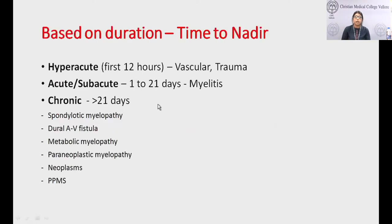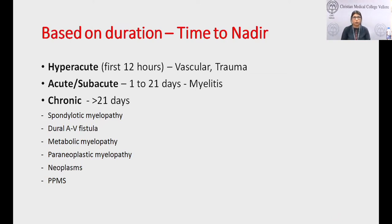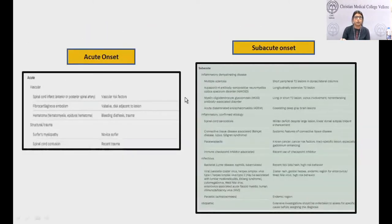For determining the etiology of spinal cord disorders, duration is key. Hyperacute — within the first 12 hours — classically means vascular involvement or trauma. Acute to subacute — 1 to 21 days — is classically myelitis: idiopathic transverse myelitis, primary demyelinating disorders, or secondary autoimmune disorders. Chronic — more than 21 days — includes structural causes, nutritional, toxic, paraneoplastic, neoplasm, and primary progressive multiple sclerosis.